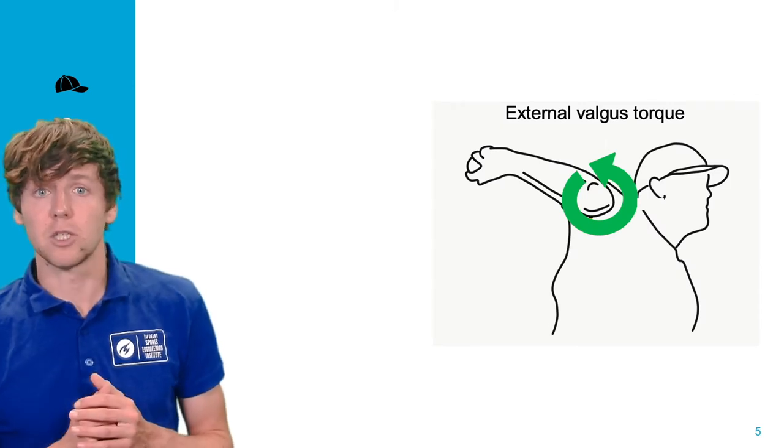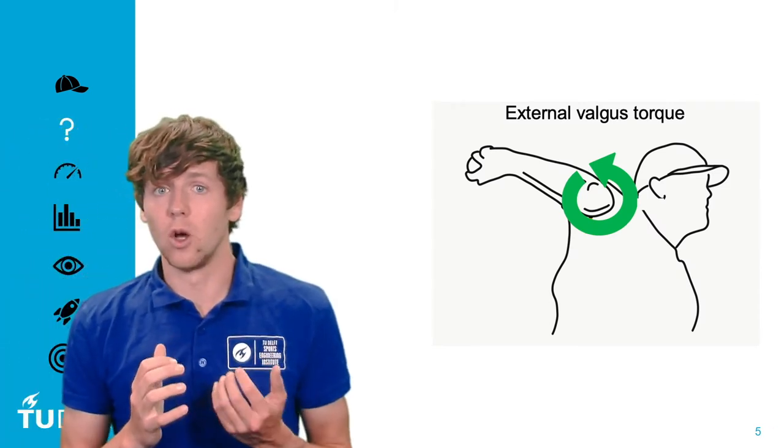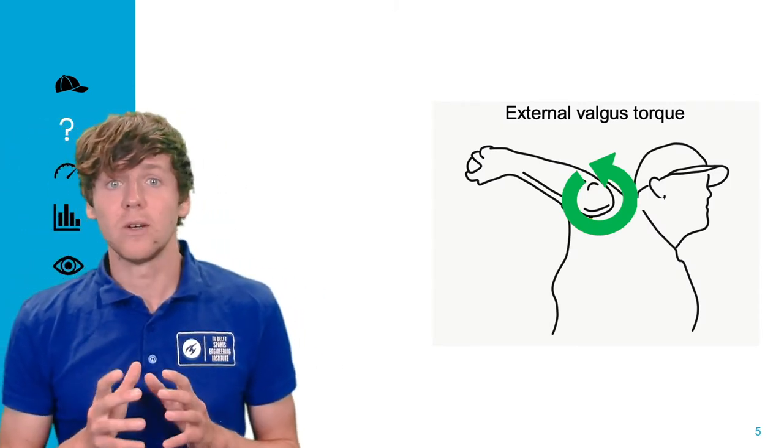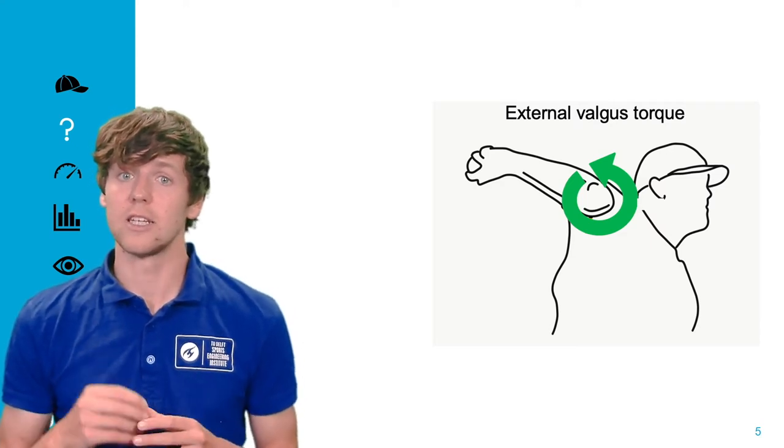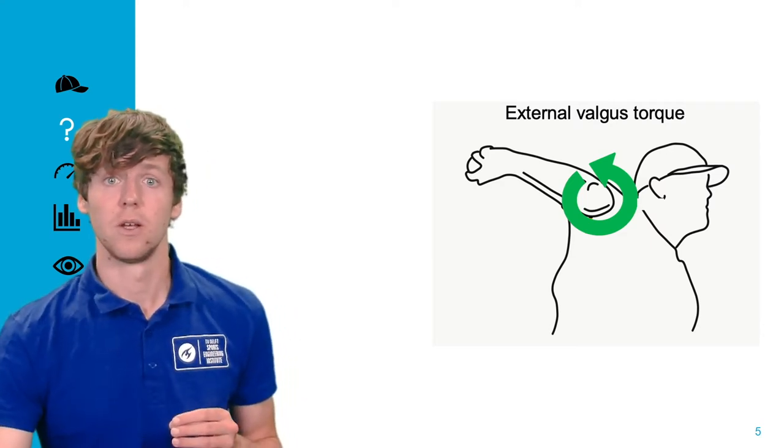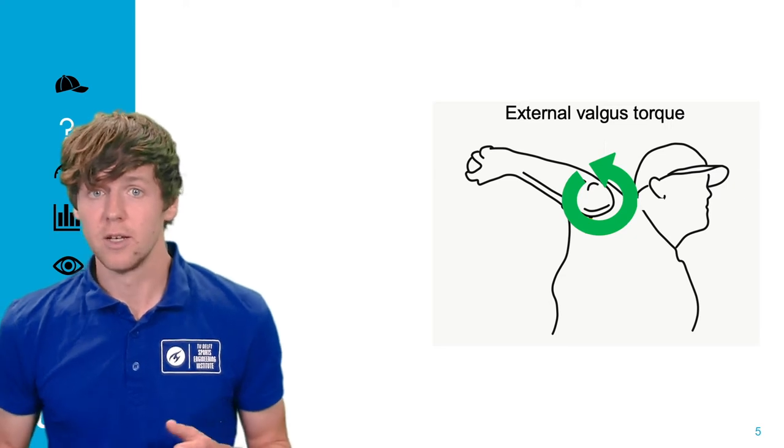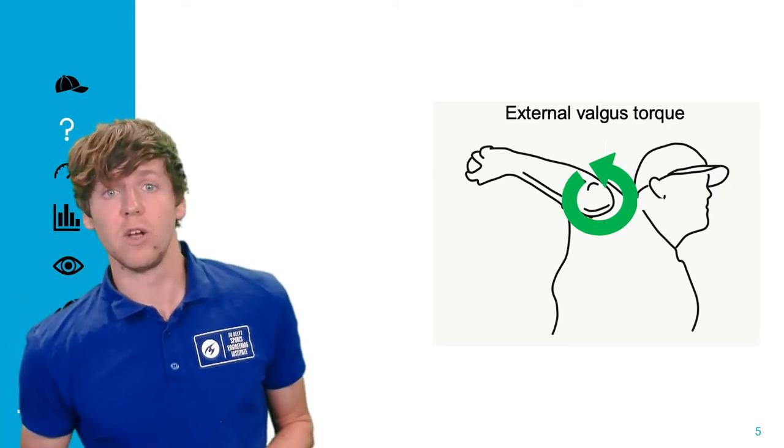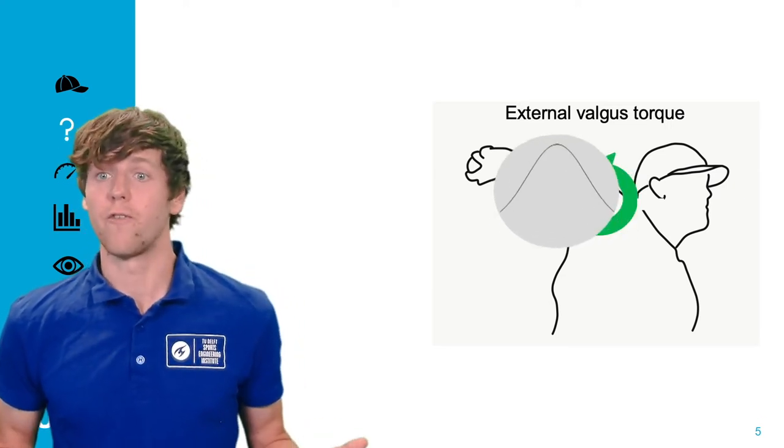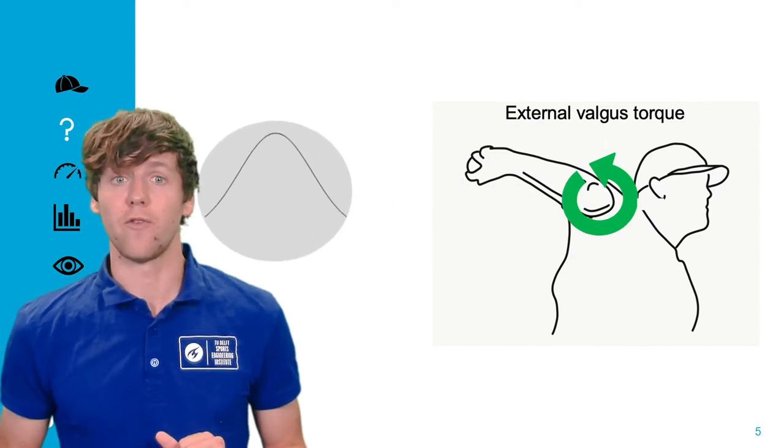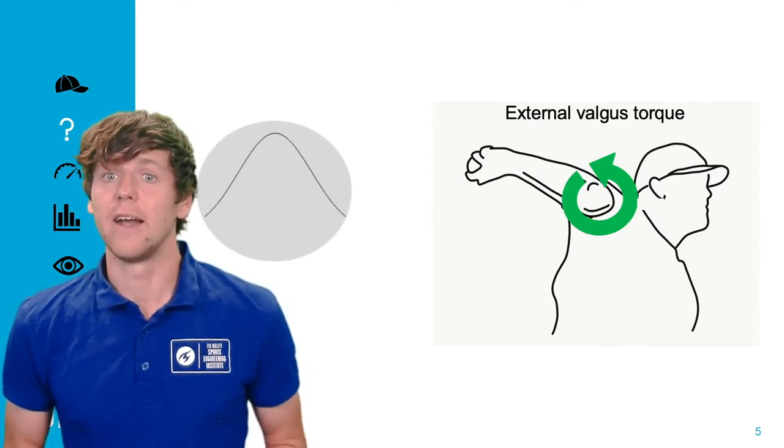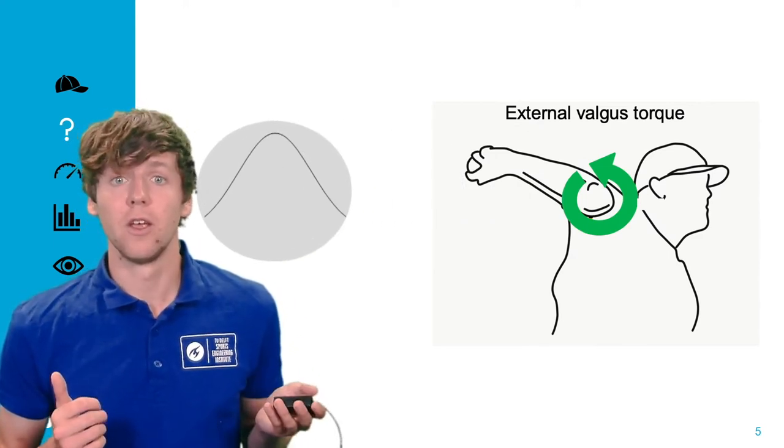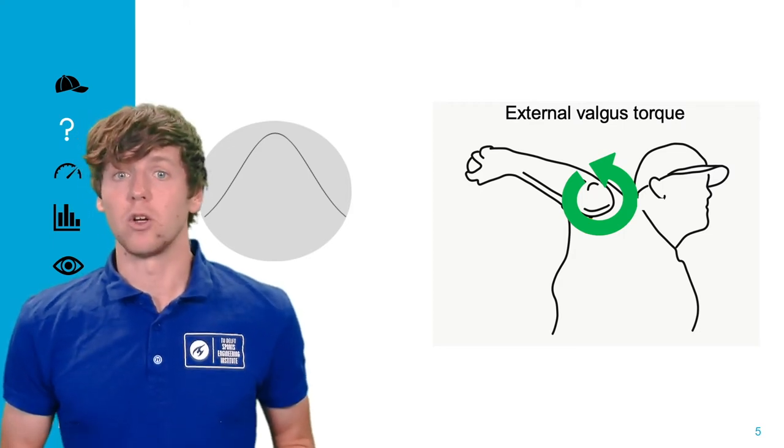It is not possible to quantify the UCL load during pitching, but we know that the external valgus torque is a good proxy for the UCL load. Therefore, the aim of the study is to describe the within individual external valgus torque variability of full effort baseball pitches and determine if this variability can be described by a Gaussian distribution.